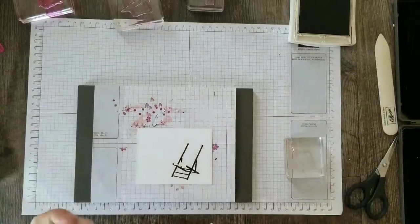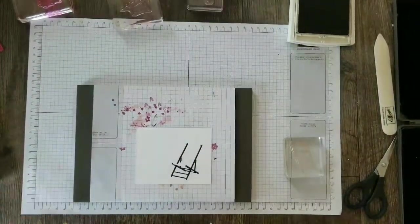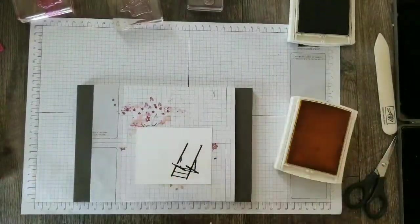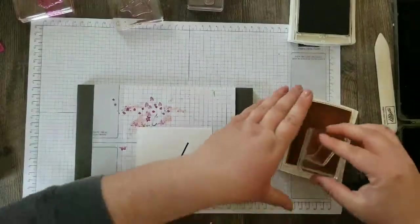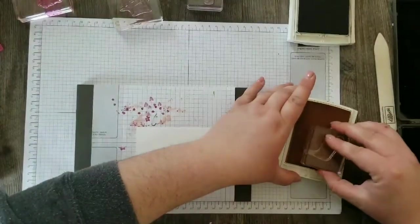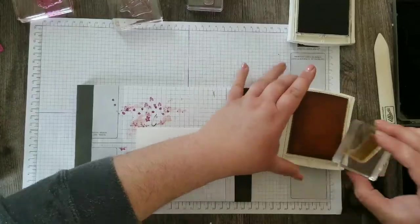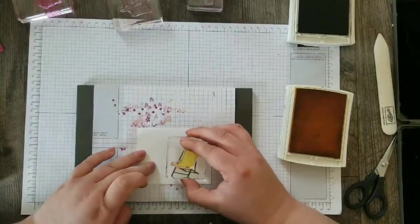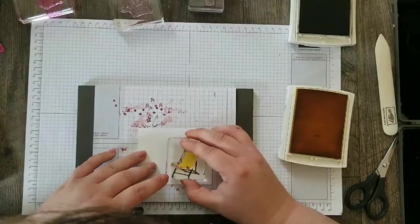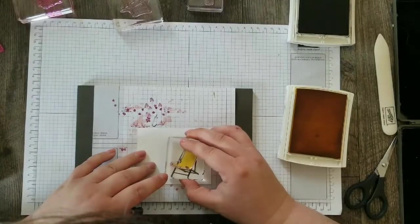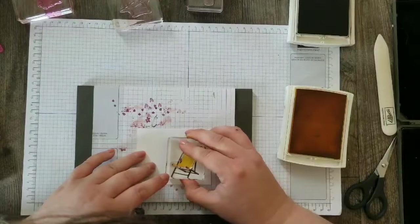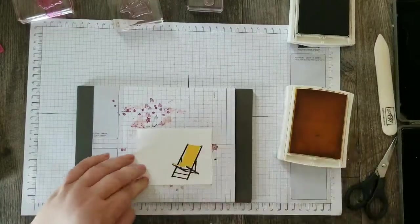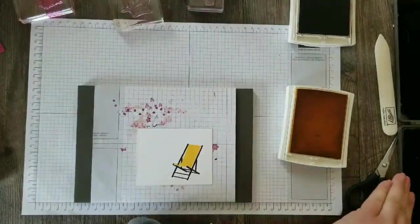And then I want the chair, the cloth of the chair, to be done in Daffodil Delight. I think these bright colors look really great together. And I'm, hopefully my head isn't in the way of your shot, I'm just going to line this right up and stamp. It's pretty easy.